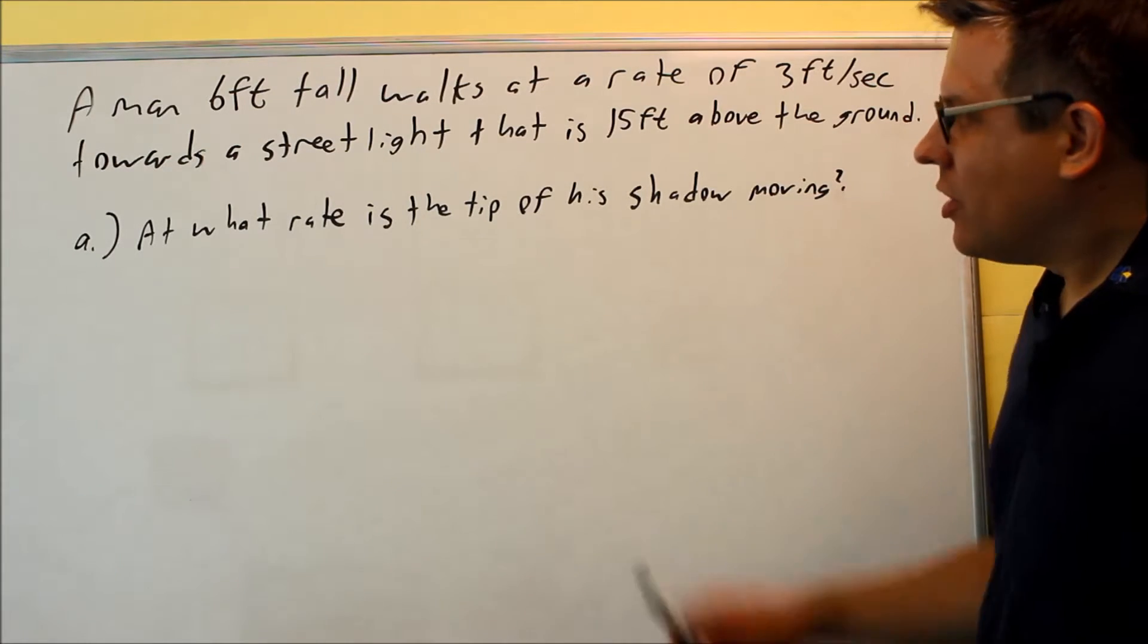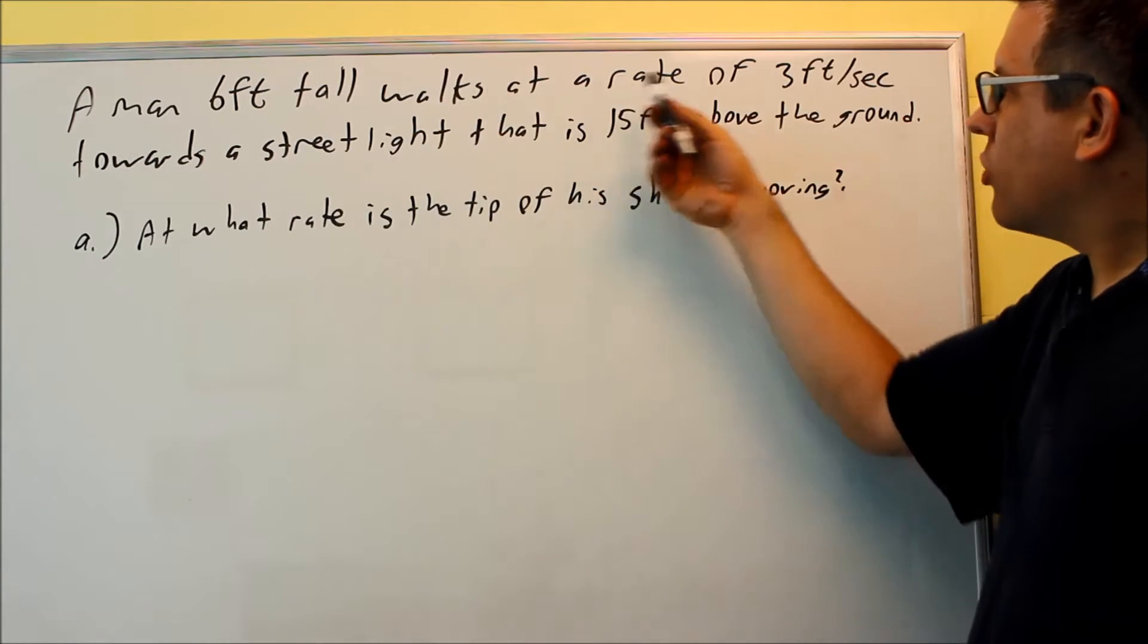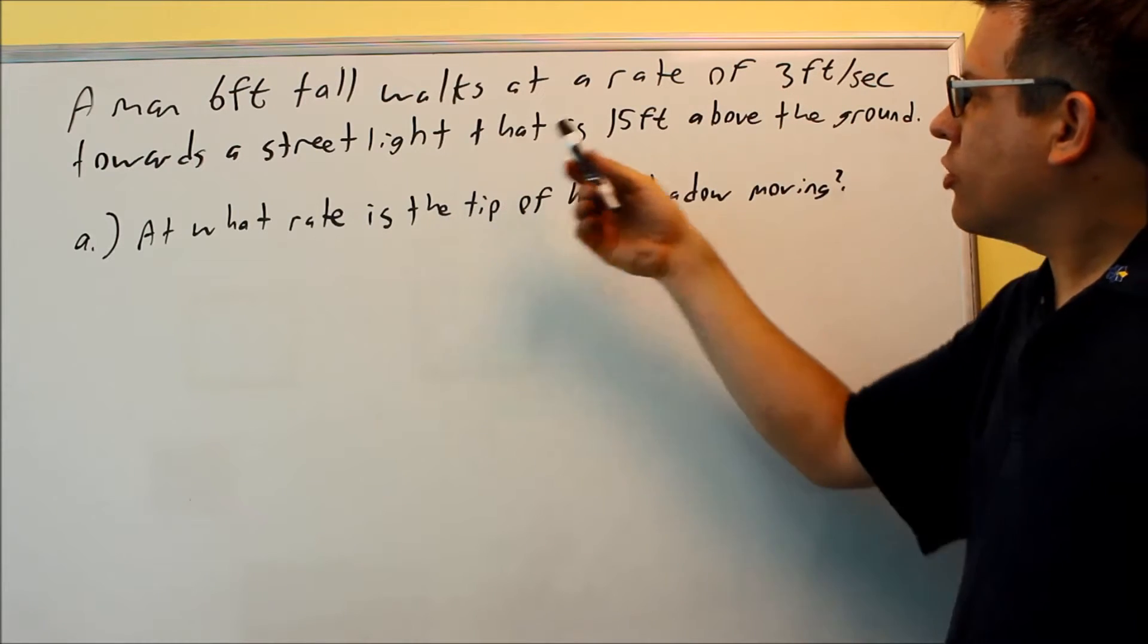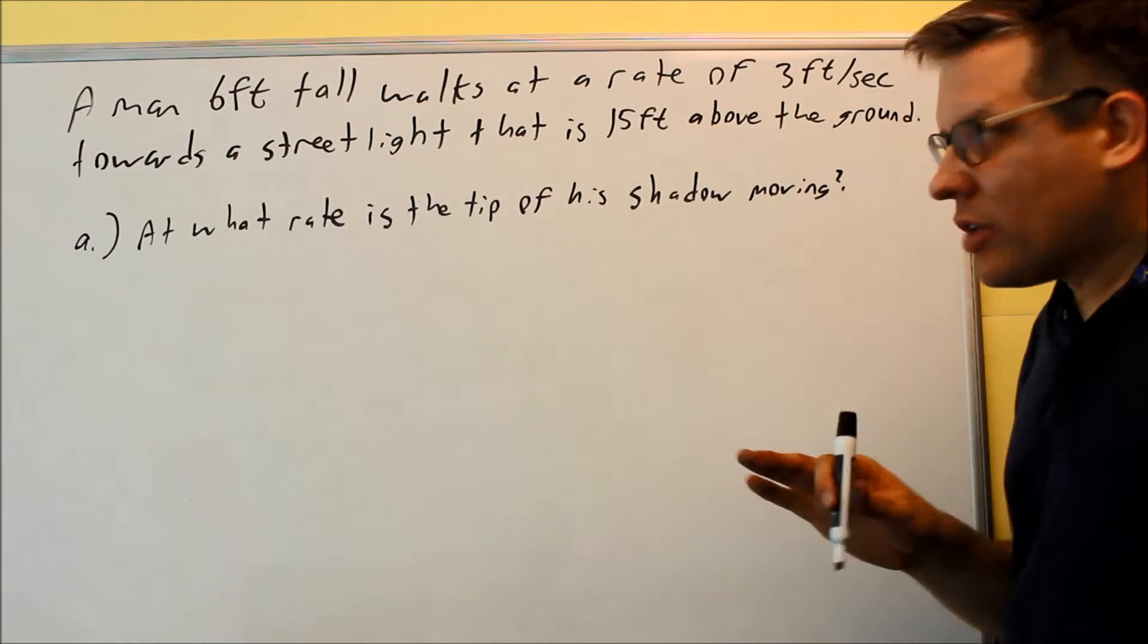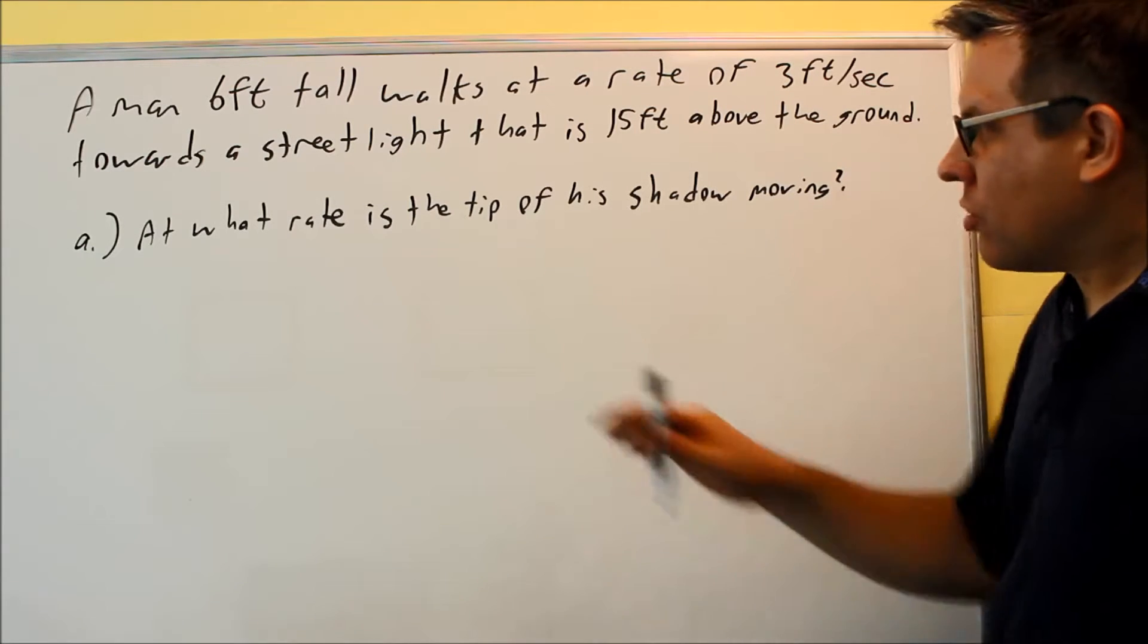We have one more related rates problem. A man six feet tall walks at a rate of three feet per second towards a street light that is 15 feet above the ground. Let's stop there and let's draw a picture.